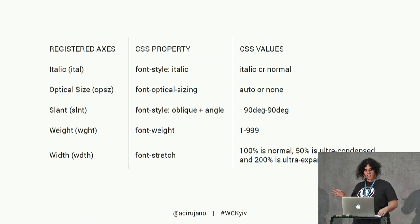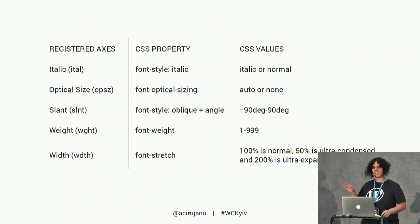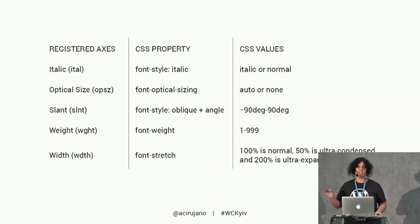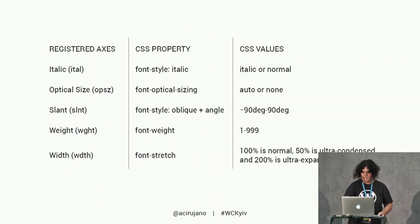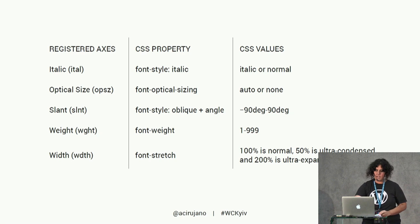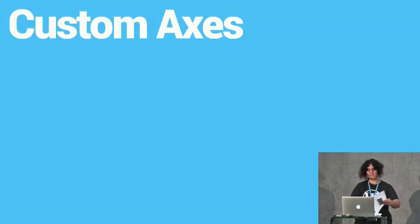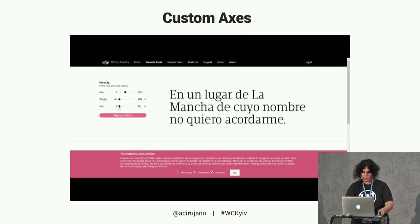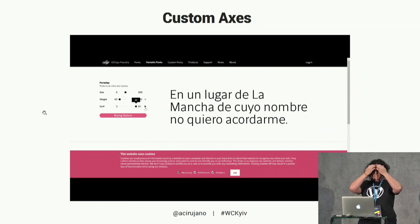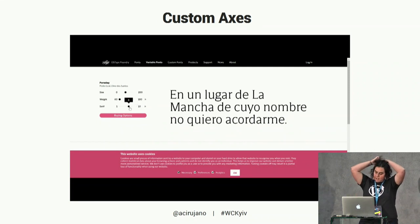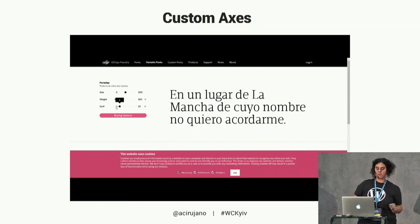These are all the values you can declare in code for controlling any of the five standard or registered axes. Now let's see the custom axis — I have another video here. The type designer can create custom axes that provide the developer with the power to control every aspect of a font.